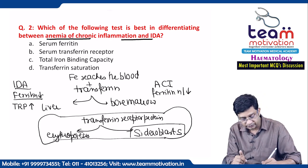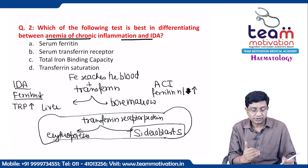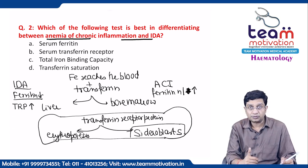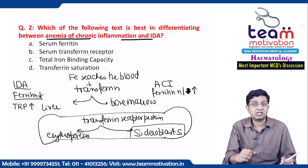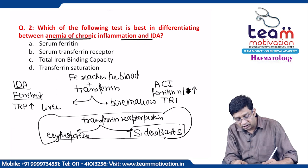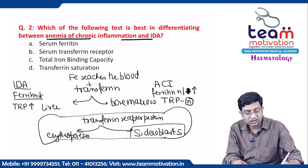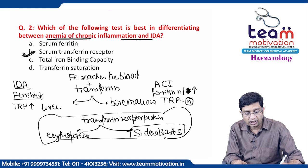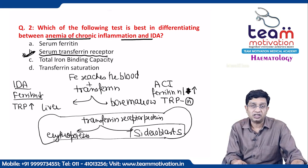In anemia of chronic inflammation, ferritin is normal or increased. When ferritin is normal or increased, transferrin receptor protein does not leave the bone marrow, so its serum level remains normal. The best test to differentiate anemia of chronic inflammation from iron deficiency anemia is the serum transferrin receptor.